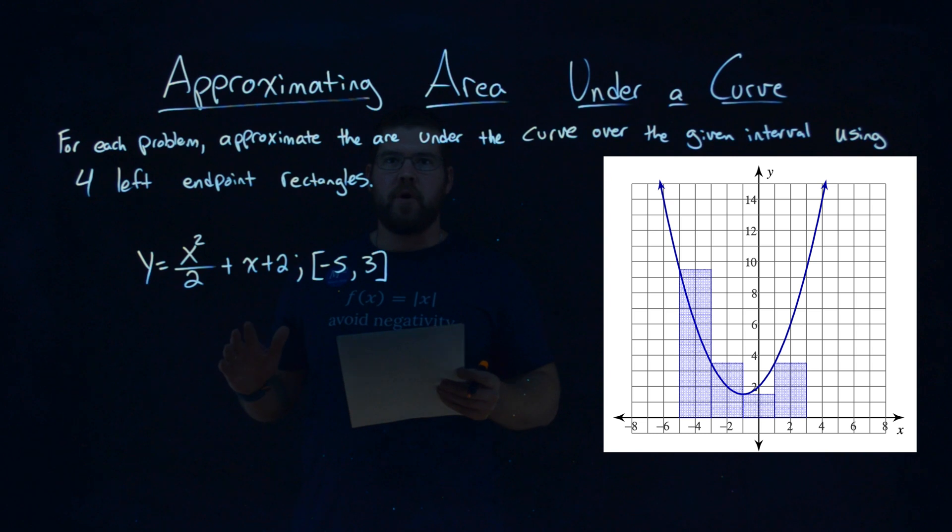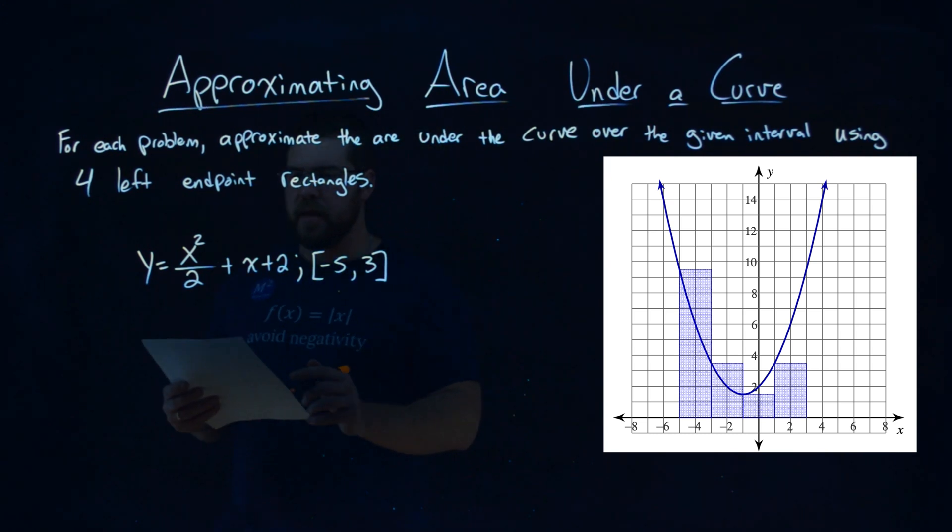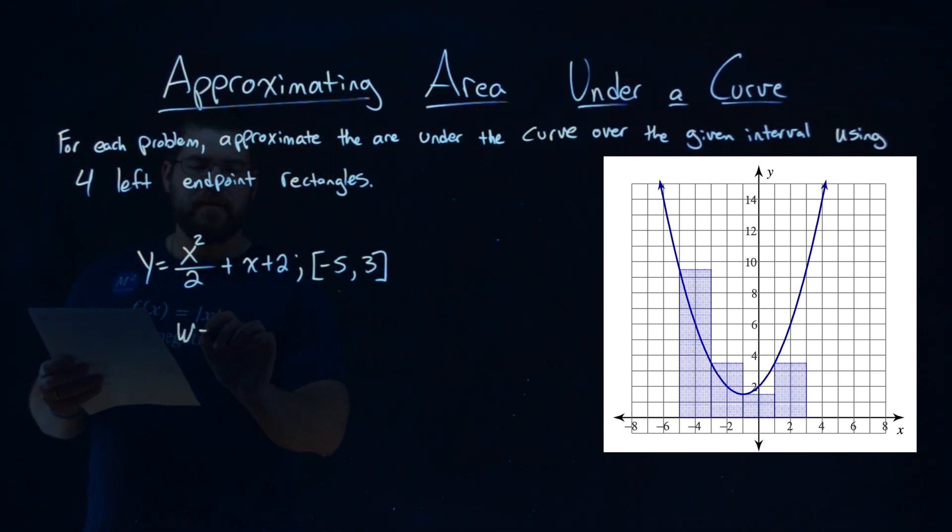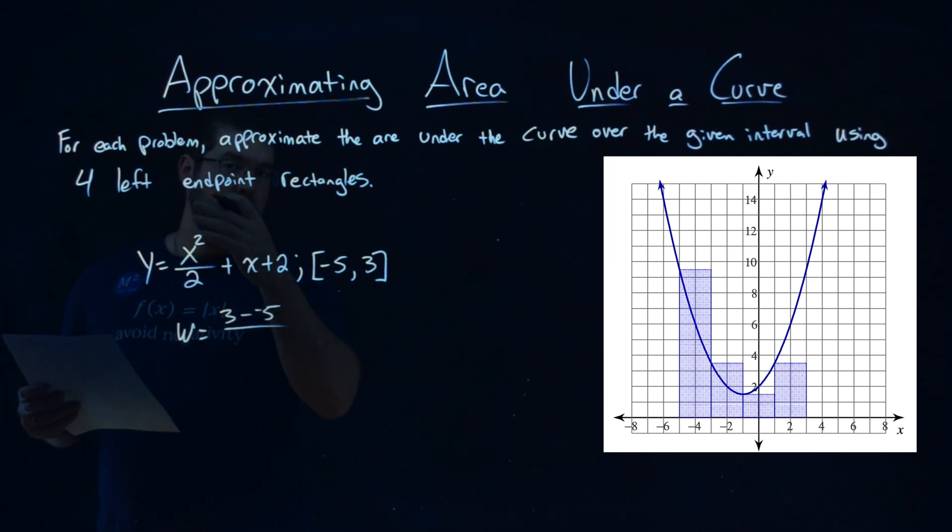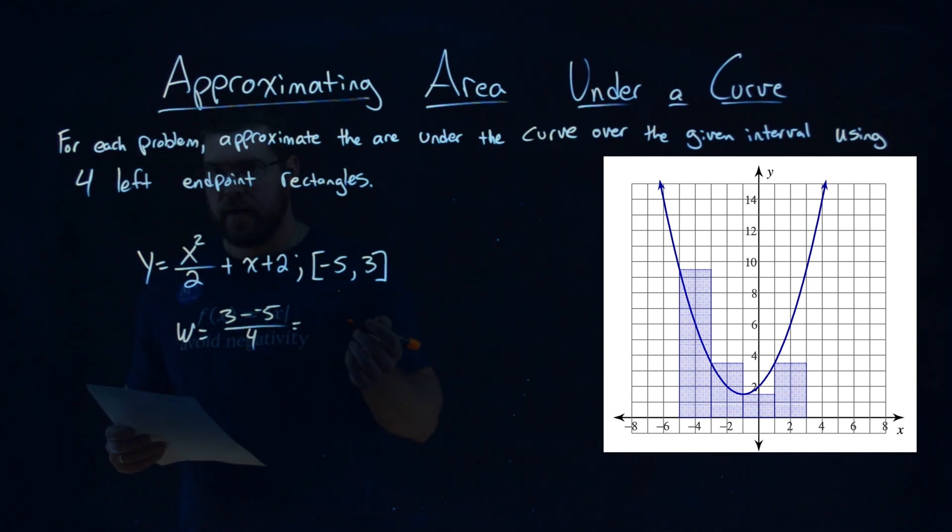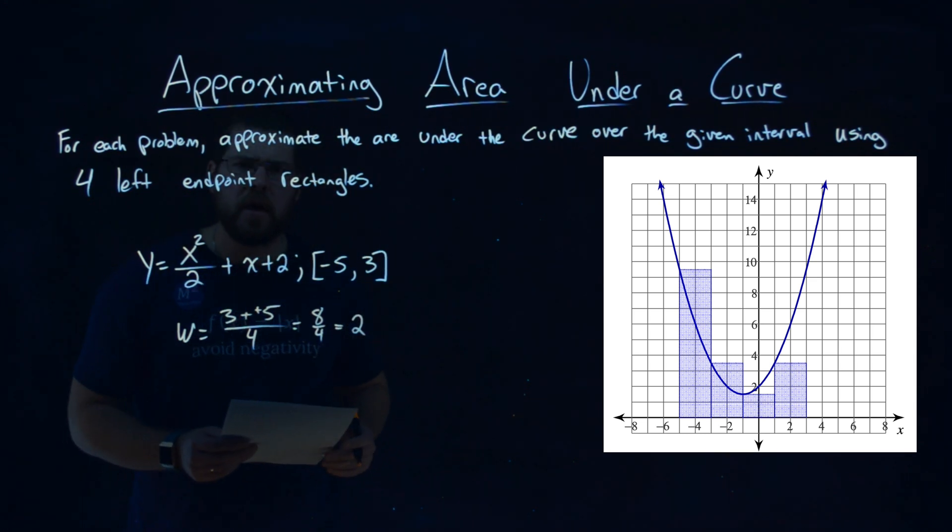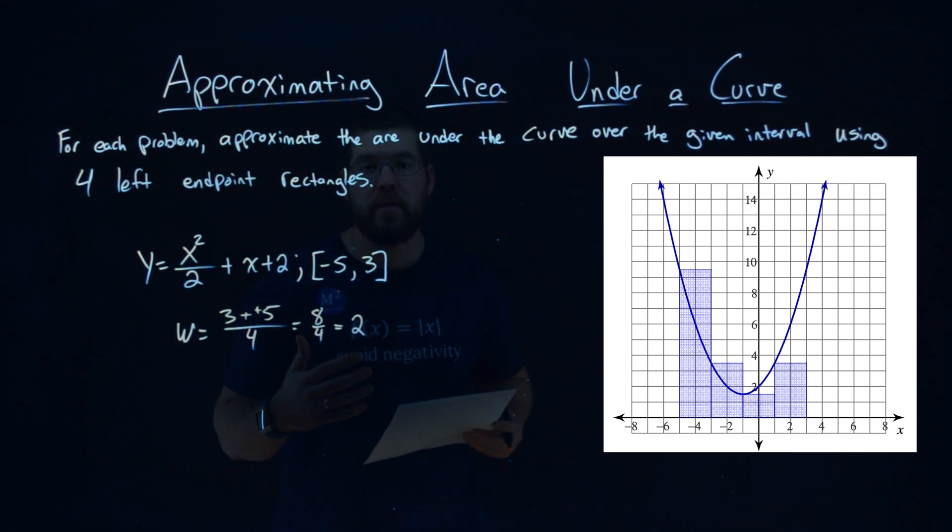First we're going to find the overall width. I call it w, and basically I'm taking my 3, finding the overall width of each rectangle. So the overall domain, 3 minus negative 5, over the number of rectangles, which is 4. Well, 3 minus negative 5 is 8 over 4, which is just 2. So each one of our rectangles will have a width of 2.